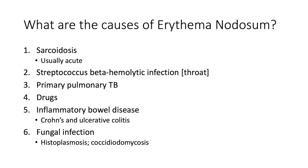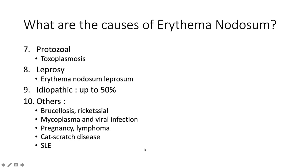Löfgren syndrome is so specific for sarcoidosis you don't even need to do a biopsy. Other causes include streptococcal beta-hemolytic infection in the throat, primary pulmonary tuberculosis, drugs, inflammatory bowel diseases like Crohn's and ulcerative colitis, and fungal infections like histoplasmosis and coccidioidomycosis.